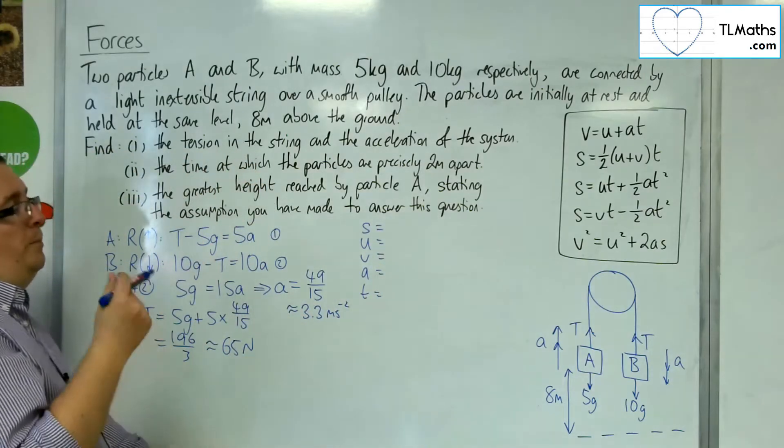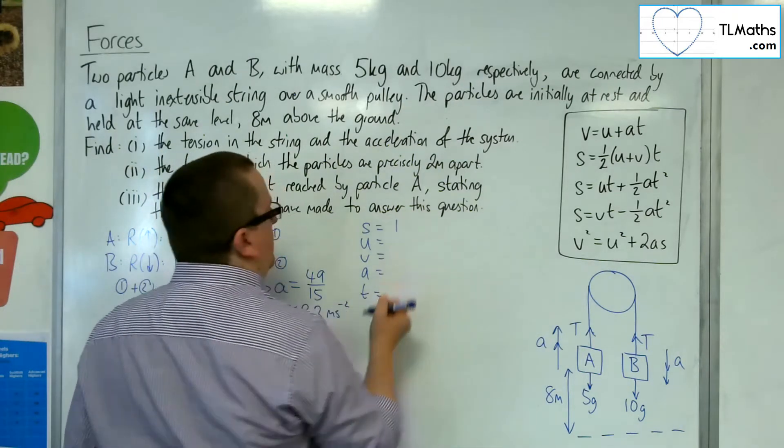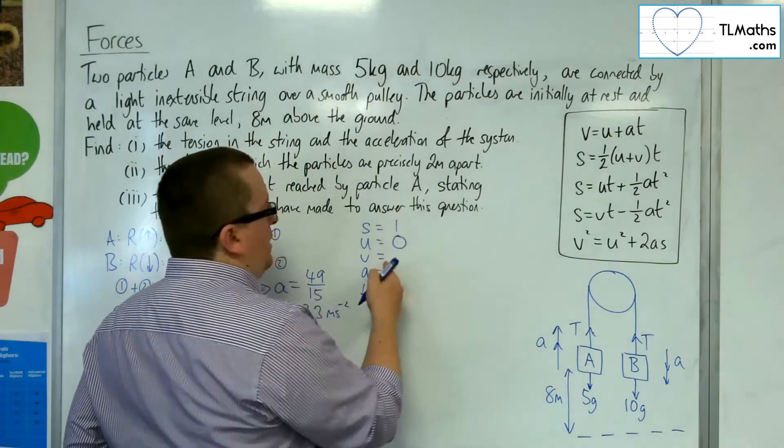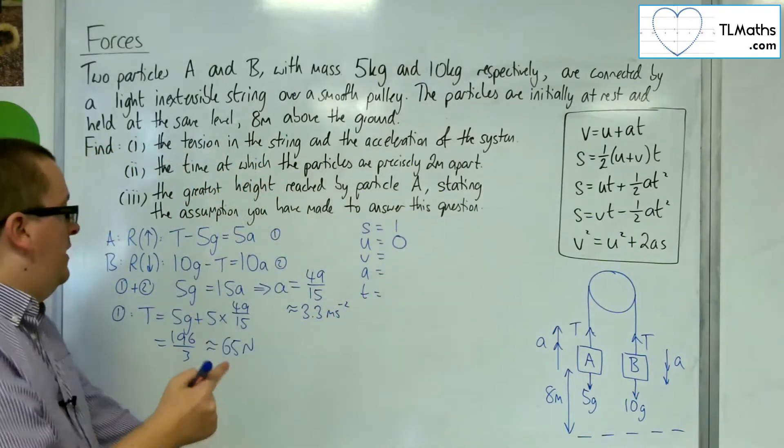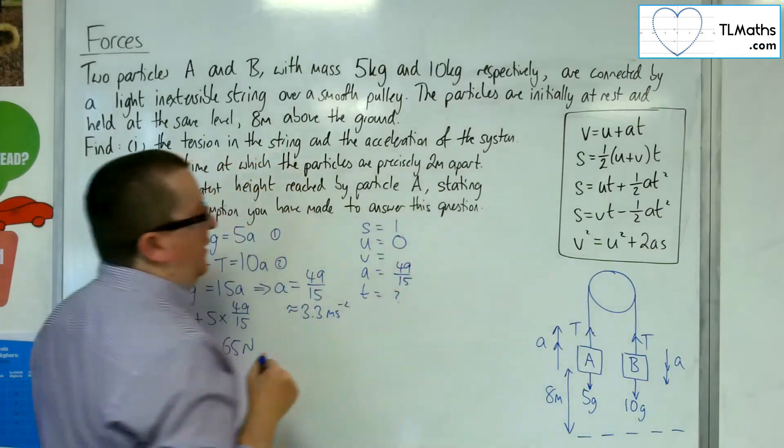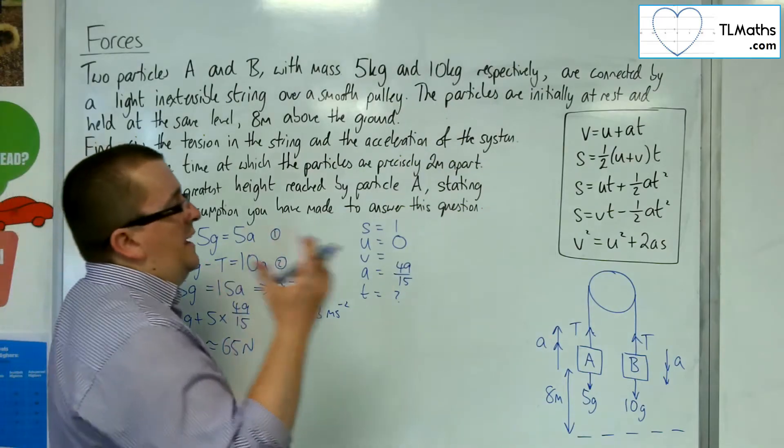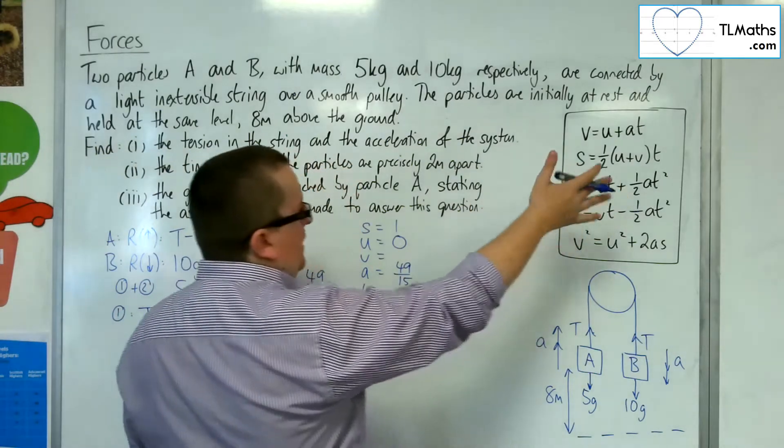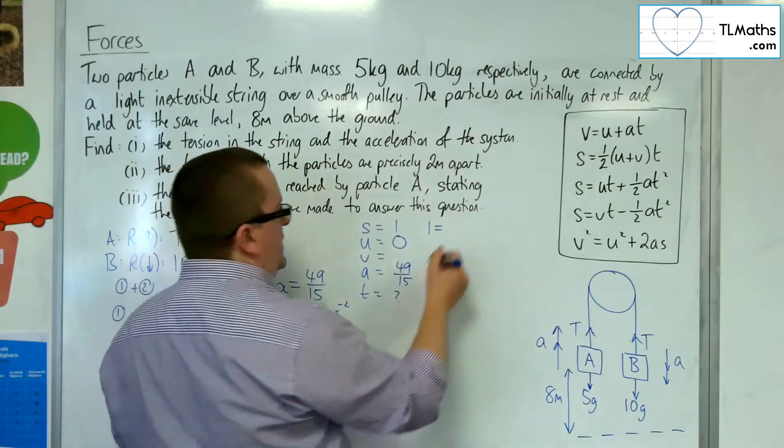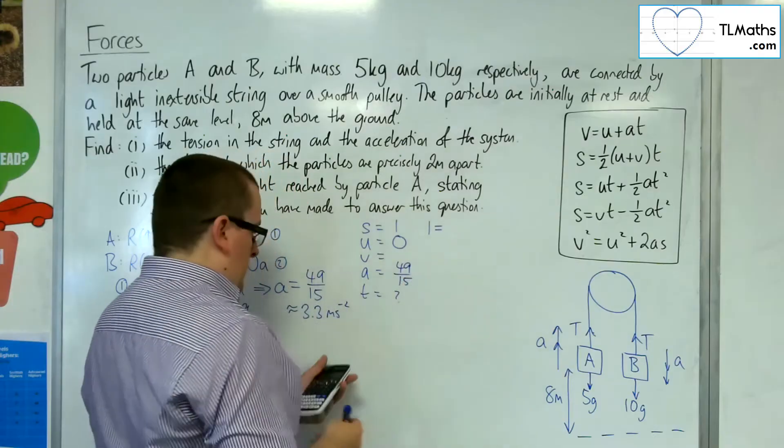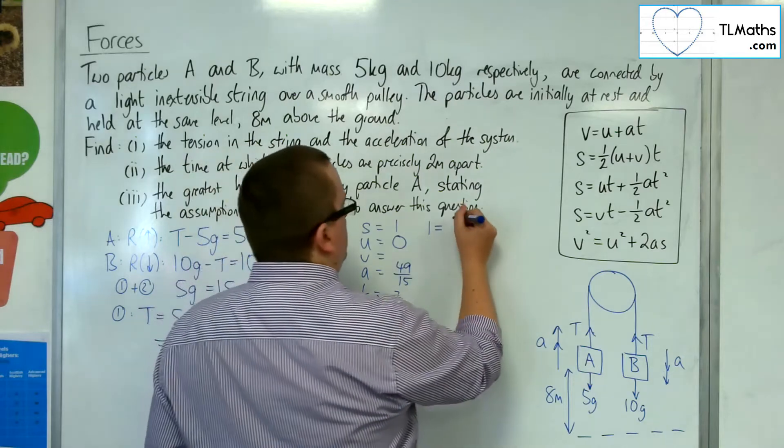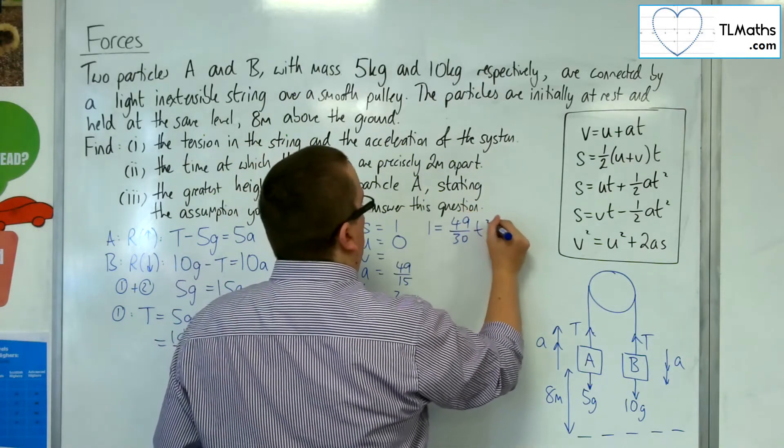then I want the displacement of a particle to be just 1. The initial speed to be 0. I don't know the final velocity. I know the acceleration is 49 over 15, and I want the time. So, I want the equation that doesn't have V, which is S, the third equation there. Okay, so we've got 1 equals U times T, so 0 times T, so 0, plus 1 half times A, so 1 half times 49 over 15, which is going to be 49 over 30, so 49 over 30 T squared.